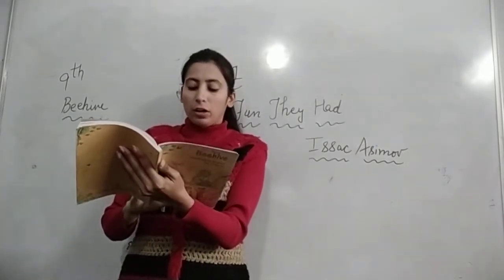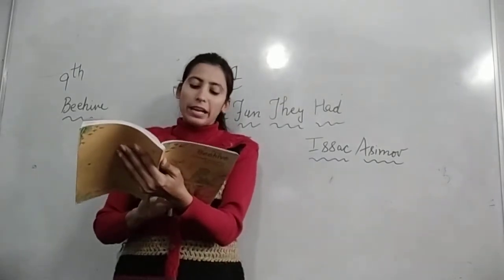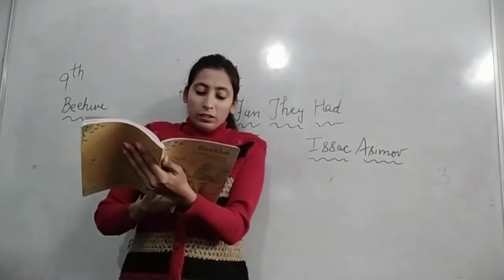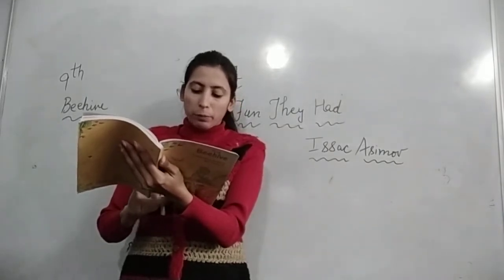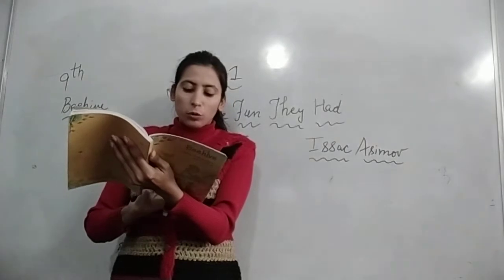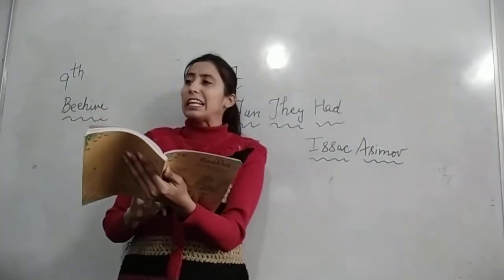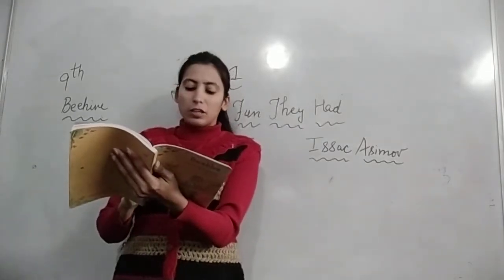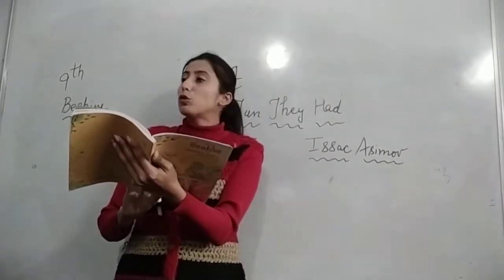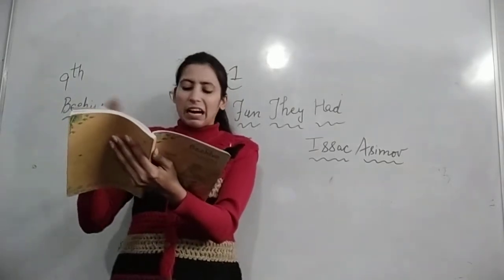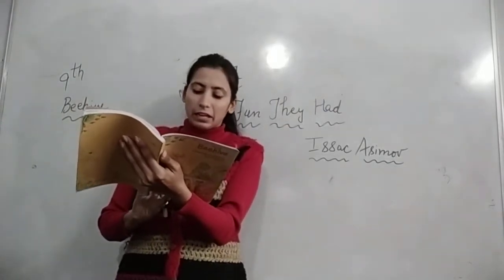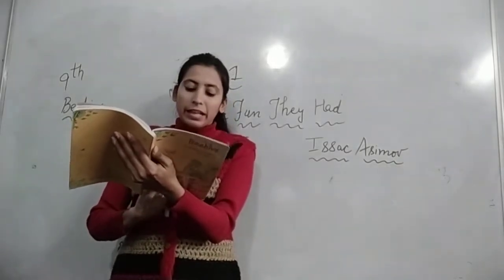He smiled at Margie and gave her an apple, then took the teacher apart. उन्होंने Margie को देखकर smile किया, उसे एक apple दे दिया, और फिर teacher को apart कर दिया — यानी खोल दिया. Margie had hoped he wouldn't know how to put it together again, but he knew how all right, and after an hour there it was again — large and black and ugly with a big screen on which all the lessons were shown and the questions were asked. Margie को लगा था कि इनको ठीक करना नहीं आता, लेकिन करीबन एक घंटे के बाद उन्होंने सब कुछ वापस ठीक कर दिया.